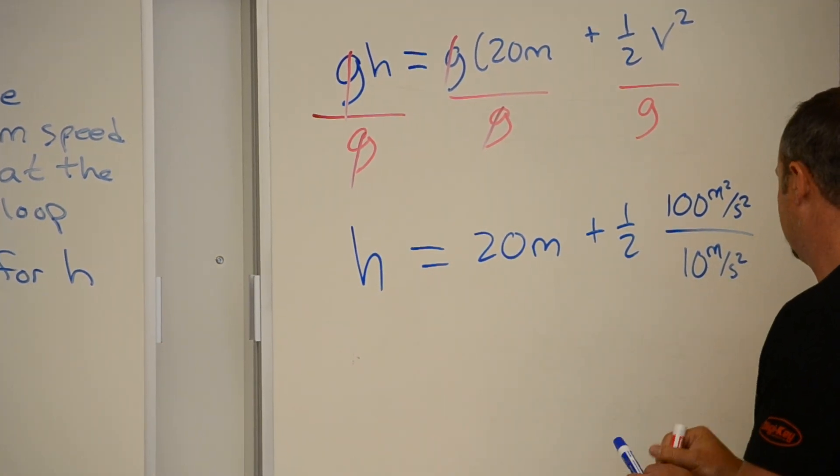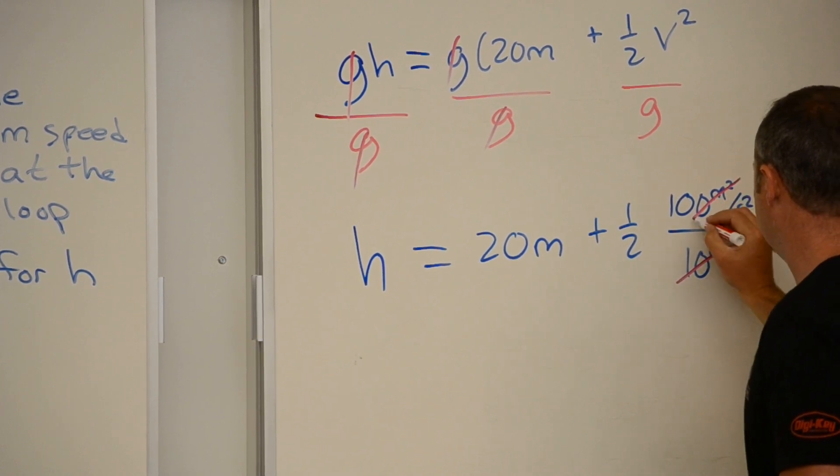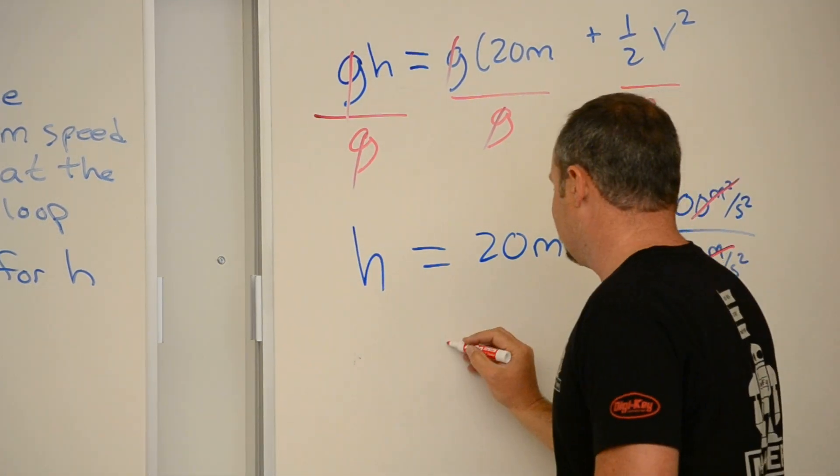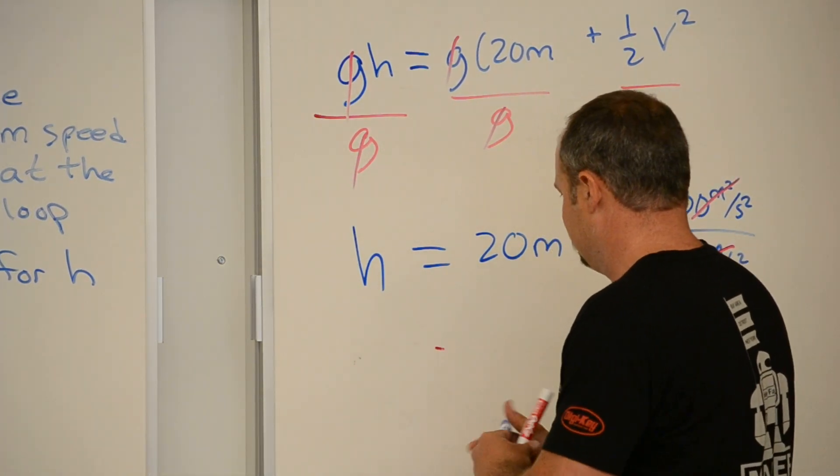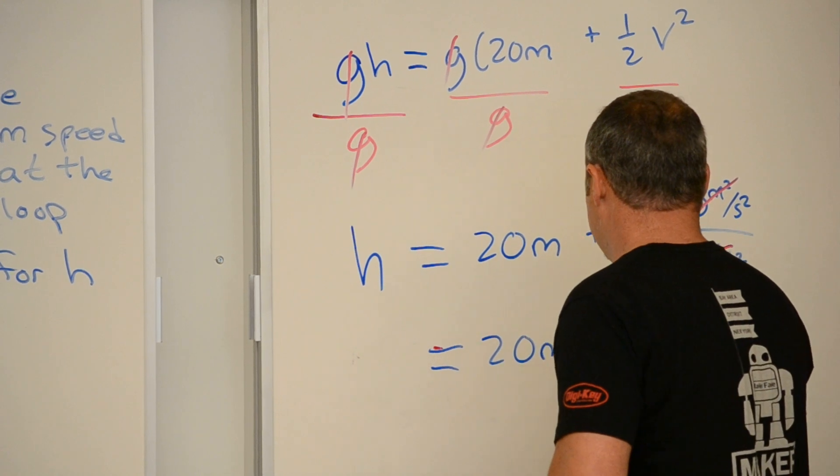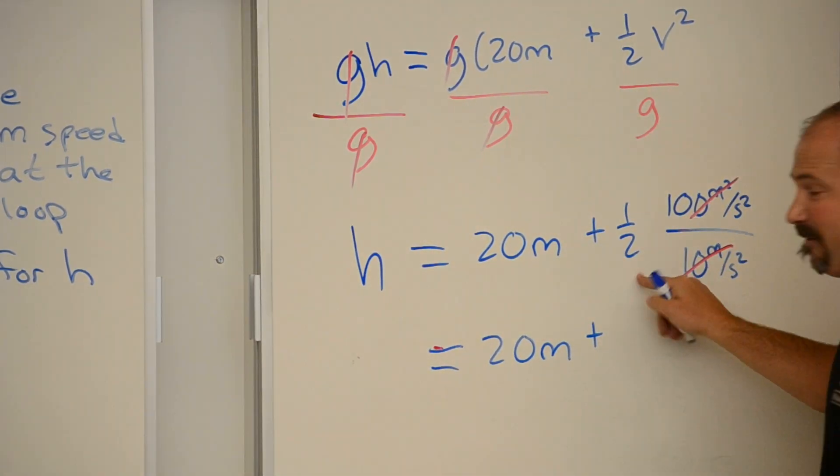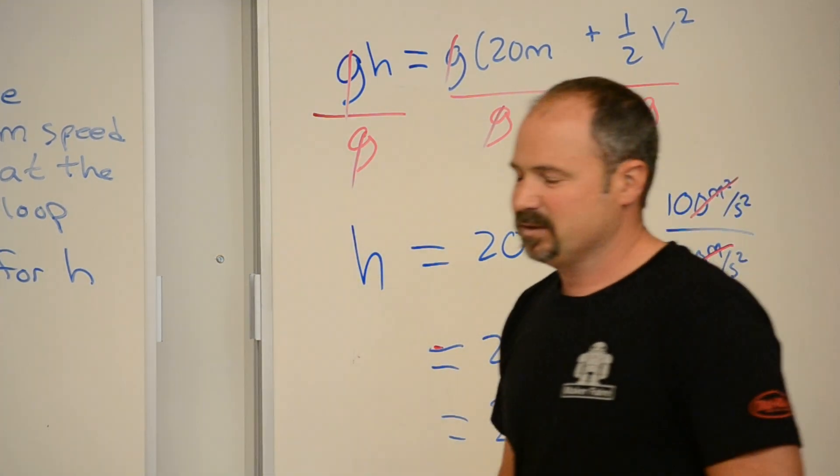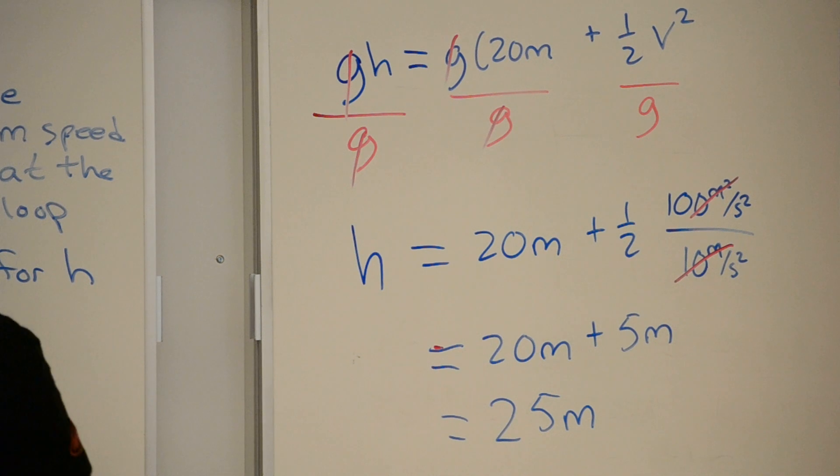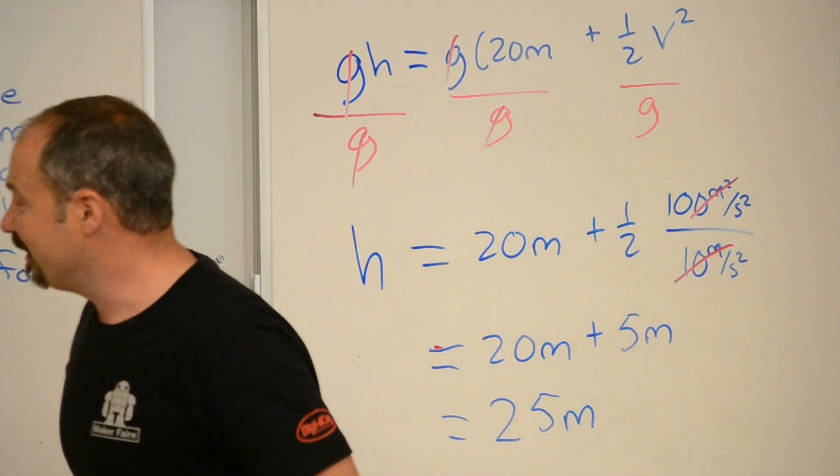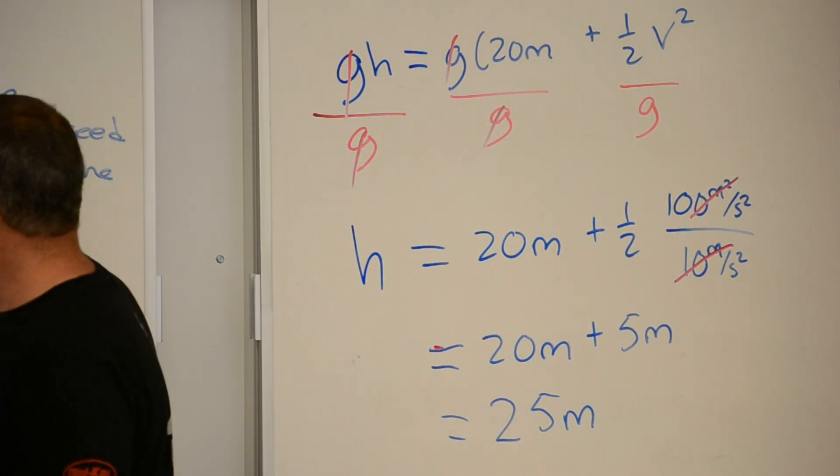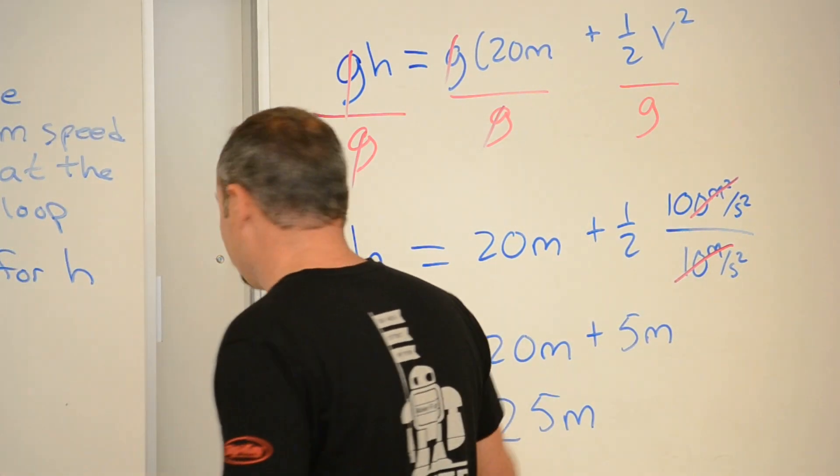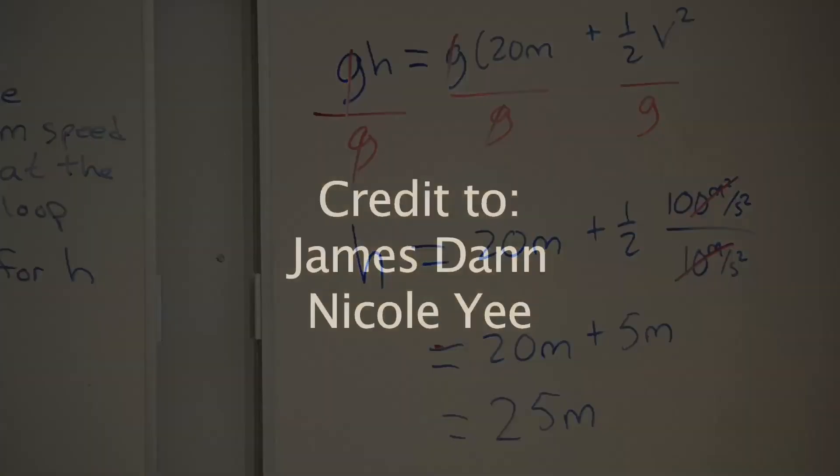This cancels with this. So 100 divided by 10 is 10, and 10, well let me write it out. 20 meters plus 10 times one-half is 5 meters. And so when designing your roller coaster, make sure that the minimum height is two and a half times the radius of the loop, because that's what we got. 25 meters for a 10 meter loop. Great. Thanks.